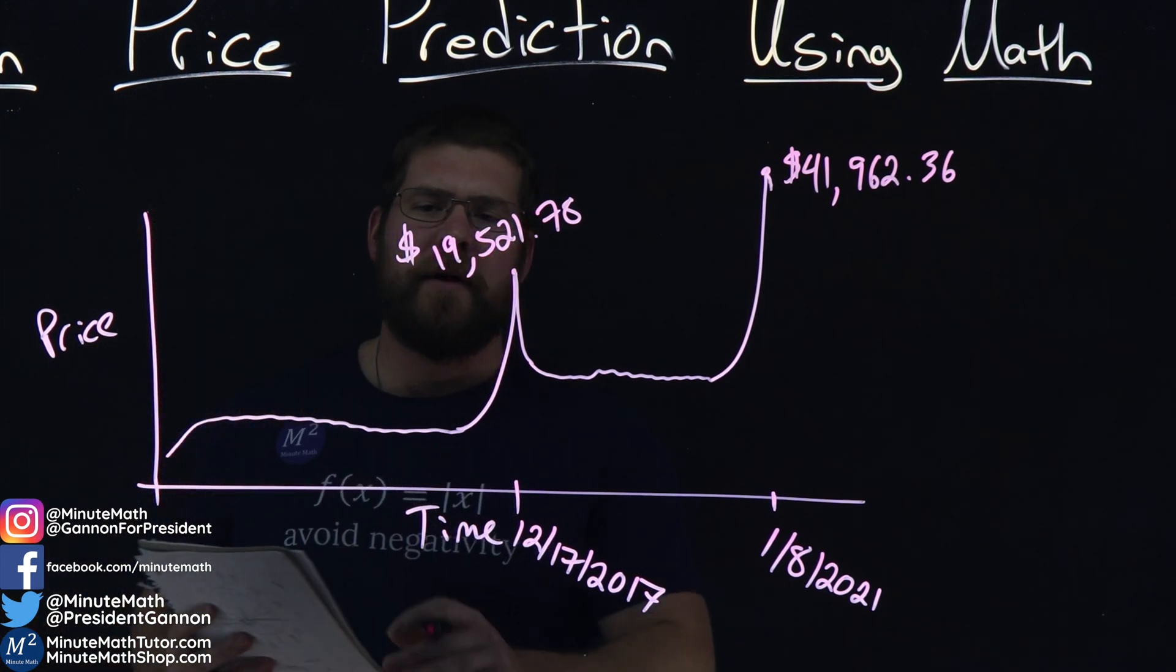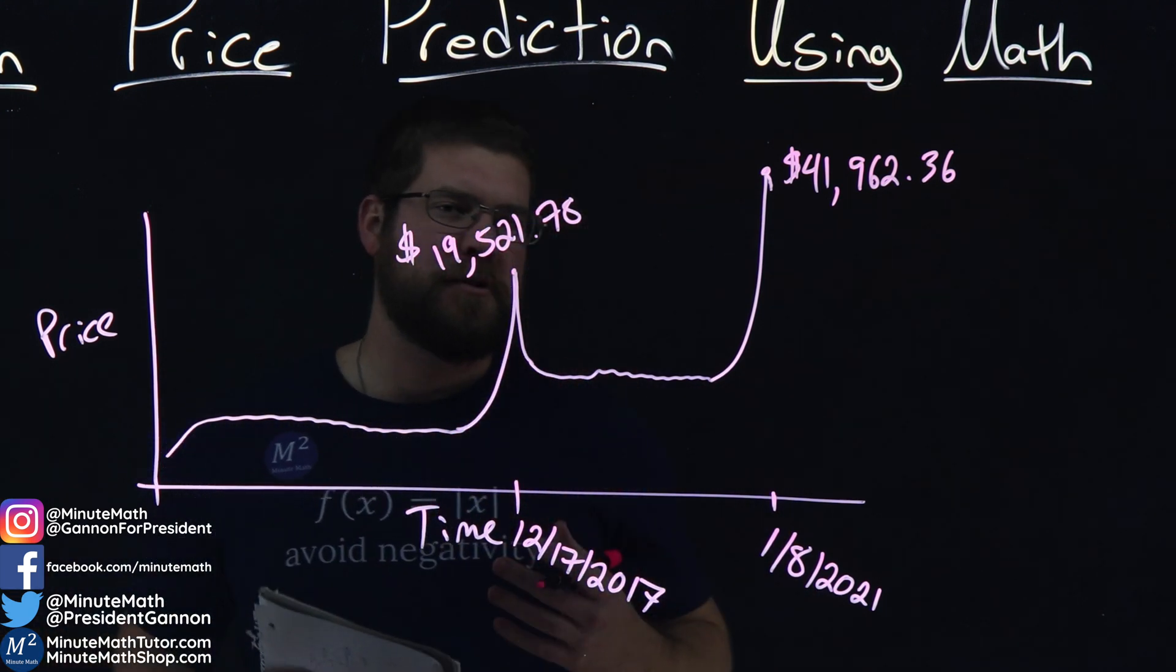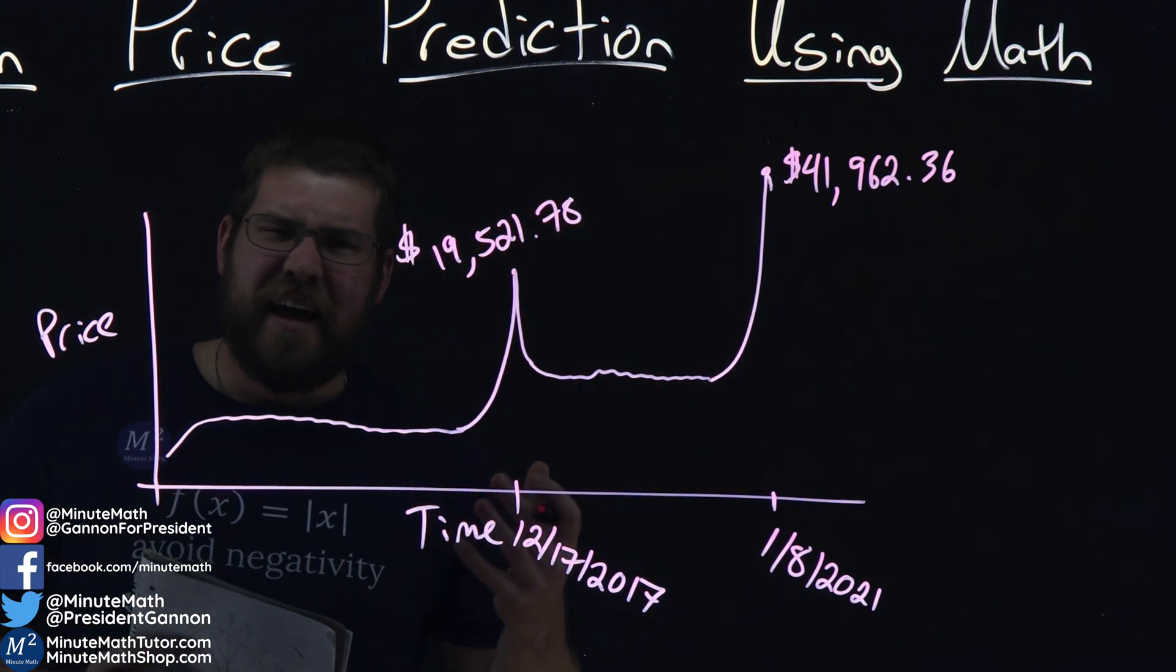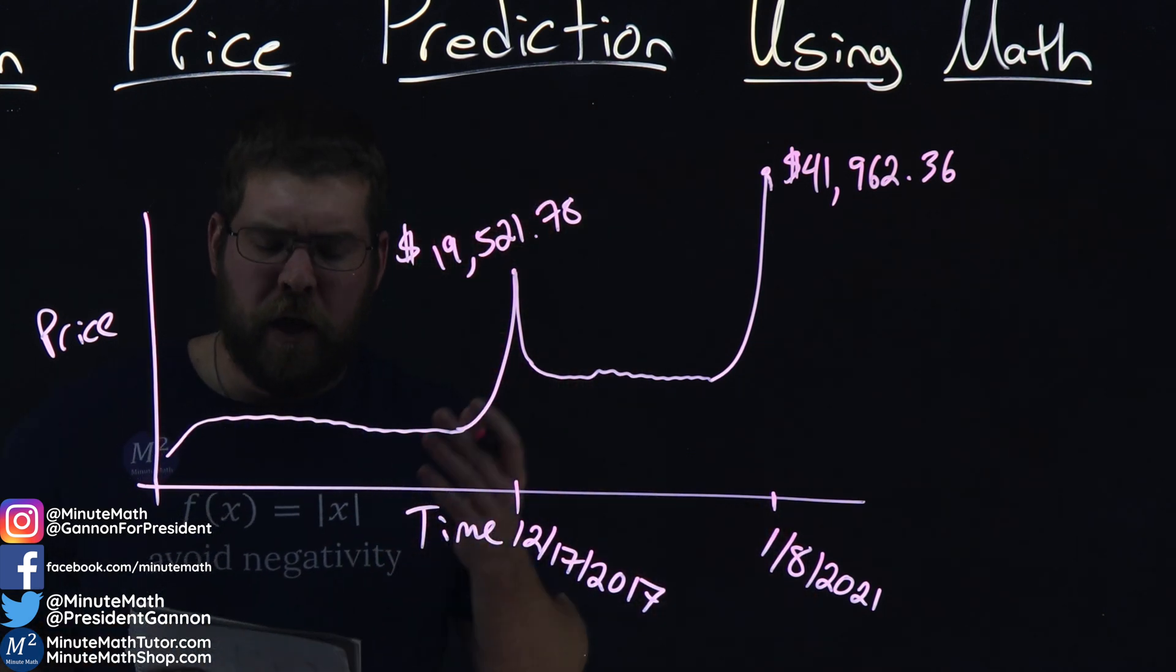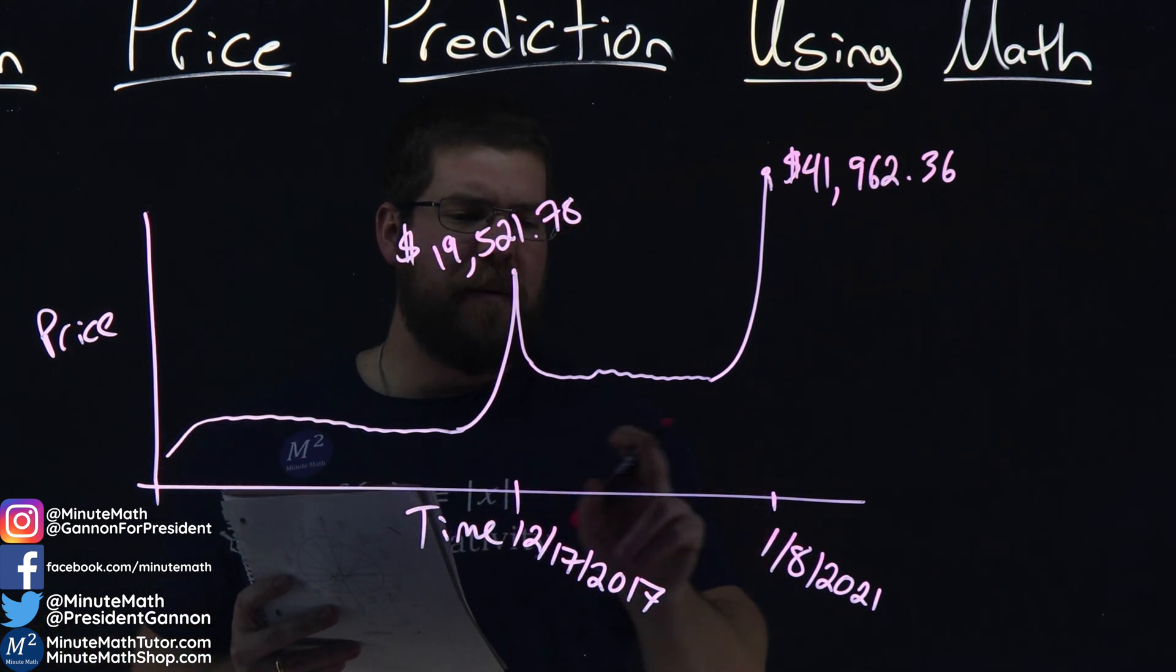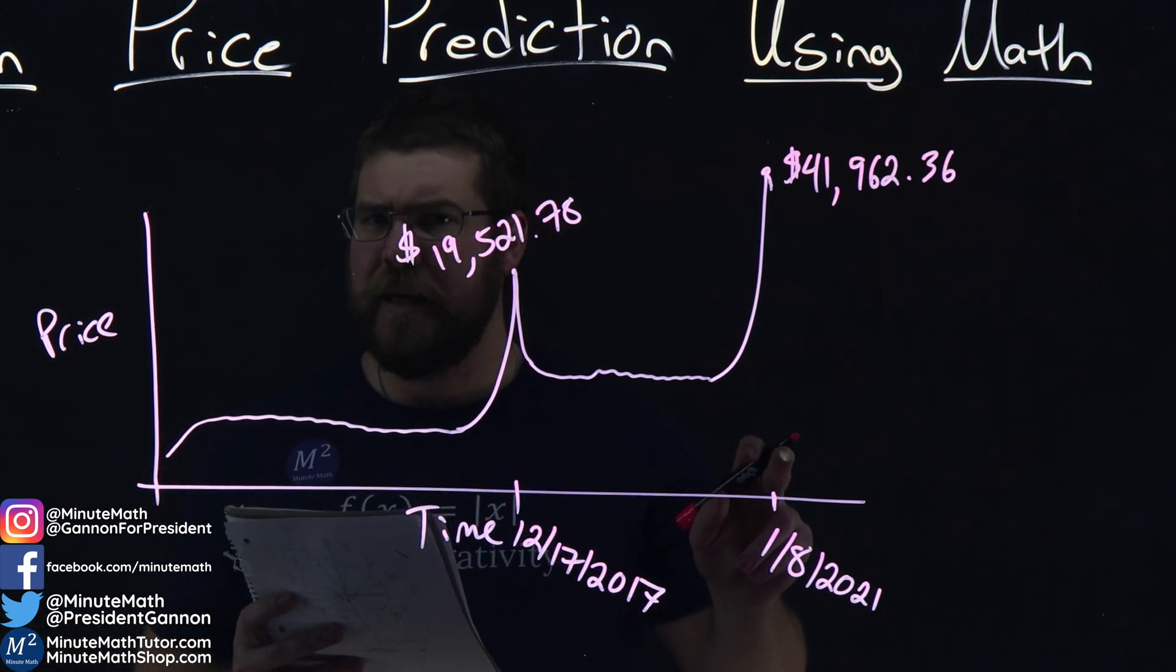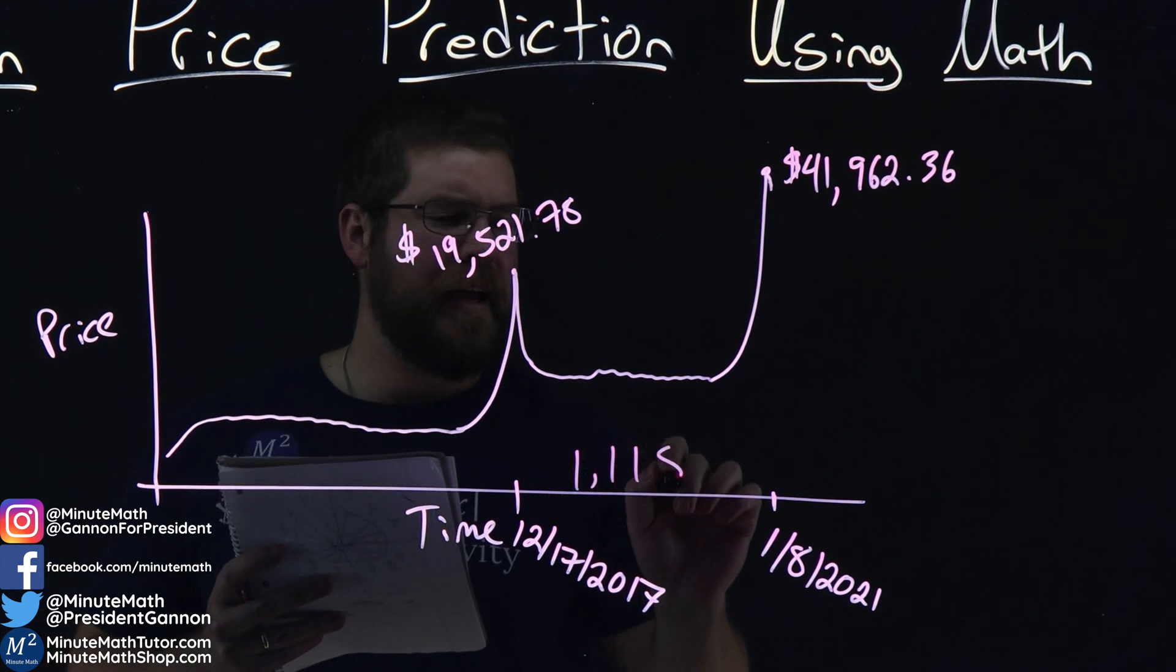So I noticed here, I was like, well, we had a flat area, we had a peak, we had a flat area, a peak. And at first, I kind of tried to make an exponential graph with this, and it was kind of difficult. So my first thing I noticed is, well, what was the distance, how many days were between each peak here? And I noticed that was 1,118 days.